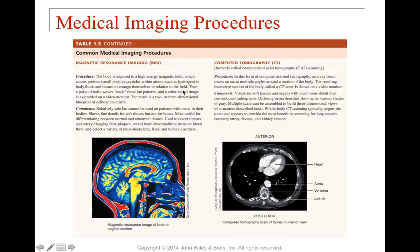A CT scan — computed tomography — uses an X-ray rotating in a circle around the body, creating transverse sections or slices of the body visible on a video monitor. You can travel through the entire region in a kind of 3D view, one slice at a time, to find where a tumor begins and ends. It's a very detailed way to use X-ray to get slivers of the whole body.